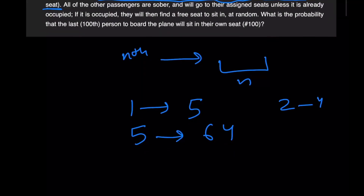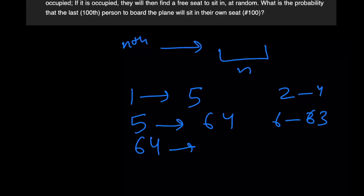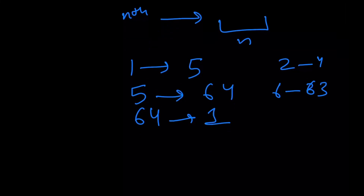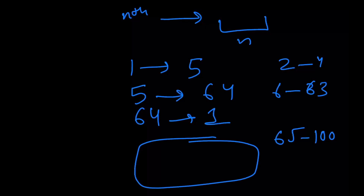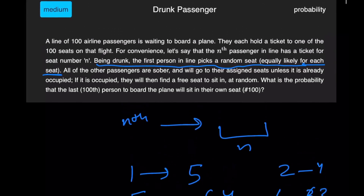So let's say person number 5 sits on seat number 64. All passengers from 6 all the way to 63 sit on their own assigned seats, but person 64 now also has an option. Since his own seat is occupied by person number 5, he too has to sit on a random seat. Let's say person 64 sits on seat number 1. Now all passengers from 65 to 100 get to sit on their own seats. This is just one example of how this situation could play out.